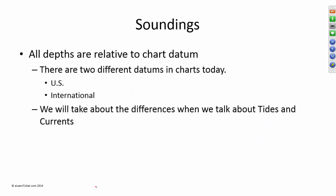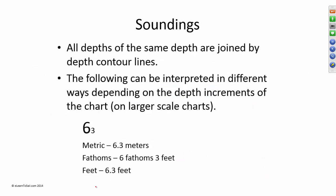So again, there are two datums. We'll talk about the differences when we get into tides and currents. So all soundings of the same depth are joined by depth contour lines. The following will be interpreted in different ways depending on the depth increments of the chart. So remember that we said charts can be either in meters, fathoms or feet.